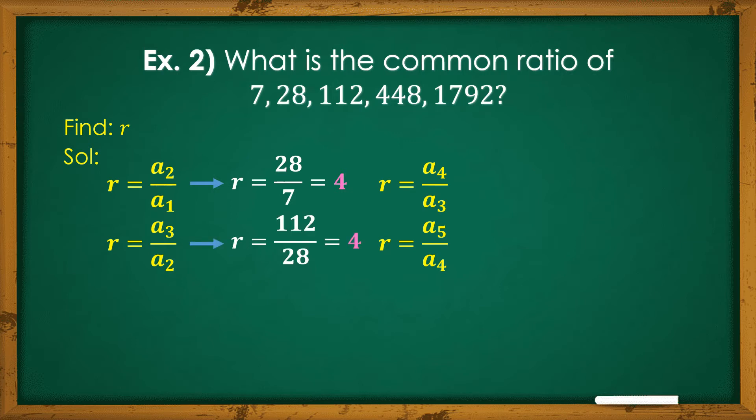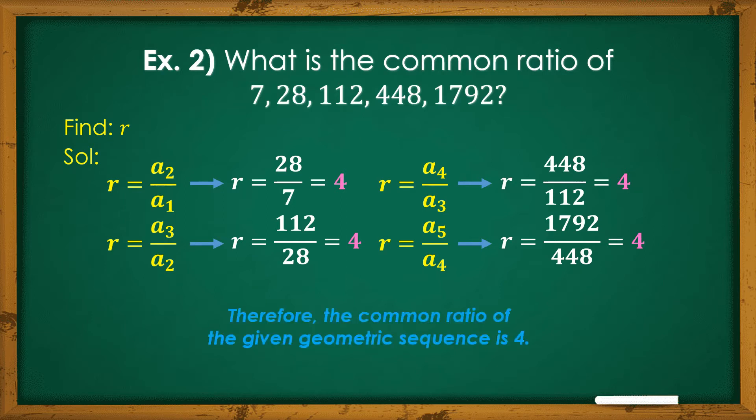Next, a sub 3 is 112, a sub 2 is 28, 112 divided by 28 is 4. Next, a sub 4 is 448, a sub 3 is 112, by division, the answer is 4. And last, a sub 5 is 1792, and a sub 4 is 448. By division again, we will get 4. This gives us the common ratio of the given geometric sequence, which is 4.